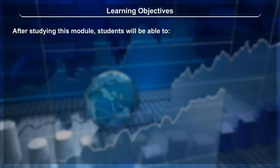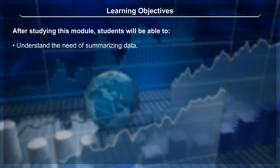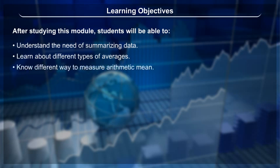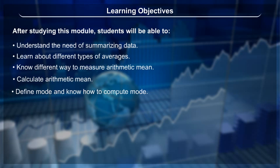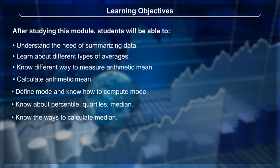Learning Objectives: After studying this module, students will be able to understand the need of summarizing data, learn about different types of averages, know different ways to measure arithmetic mean, calculate arithmetic mean, define mode and know how to compute mode, and know about percentile, quartiles, and median.